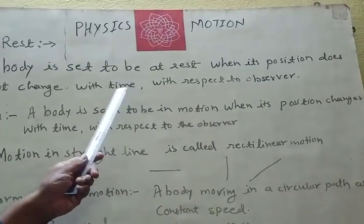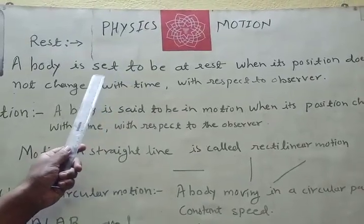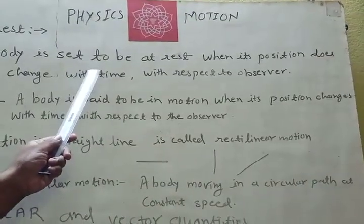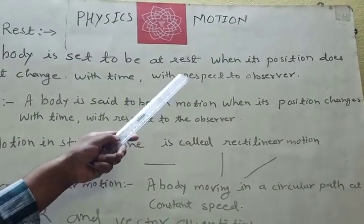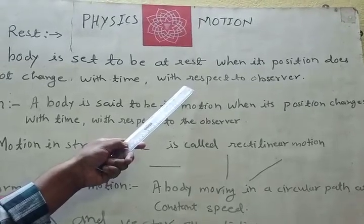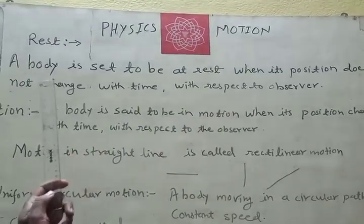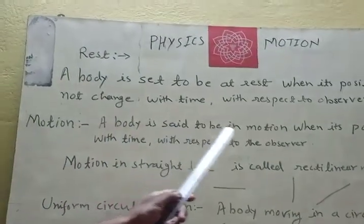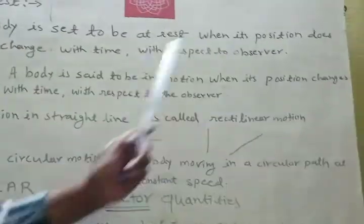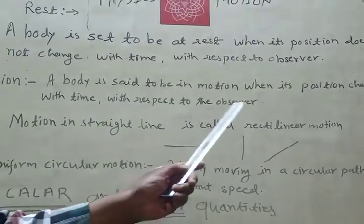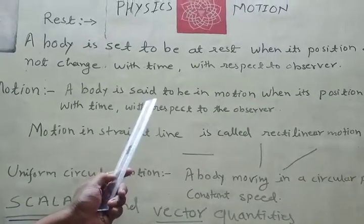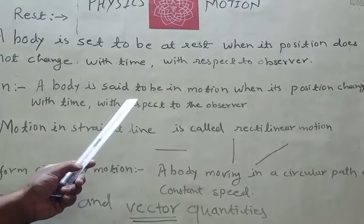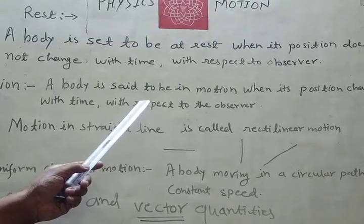We have already explained that rest to define time. When the object is set to be in motion, its position changes with time with respect to observer. Now, when the object's position changes with time with respect to observer, then object is set to be in motion.